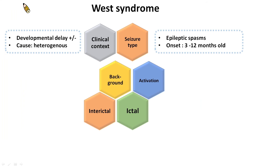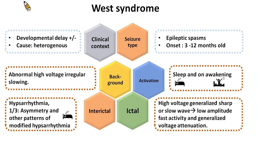To summarize our first epilepsy syndrome, West syndrome: this syndrome is characterized by the onset of epileptic spasms, typically in the first year of life. Global developmental impairment is typically seen. The background EEG is often highly disorganized, with high-voltage irregular slow waves intermixed with multifocal spikes and polyspikes — this is termed hypsarrhythmia. In the early period after onset of epileptic spasms, the EEG may only be abnormal in sleep, so ensure to obtain a sleep and awake EEG for a patient with suspected epileptic spasms. Epileptic spasms are often associated with high-voltage generalized sharp or slow waves, followed by low-amplitude fast activity and generalized voltage attenuation.